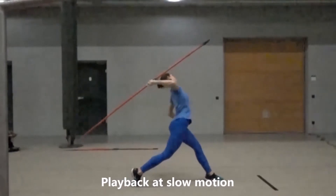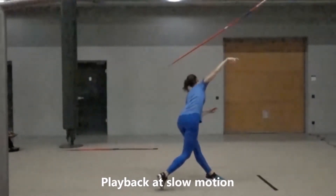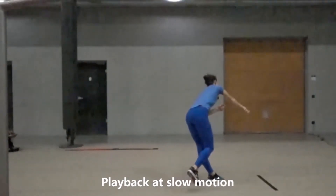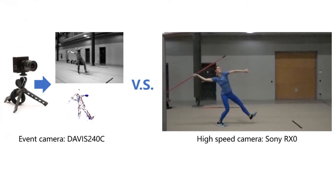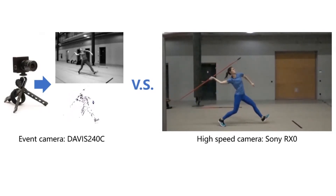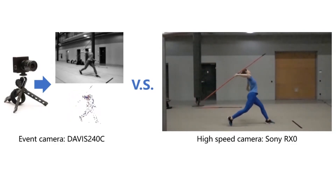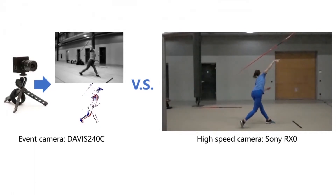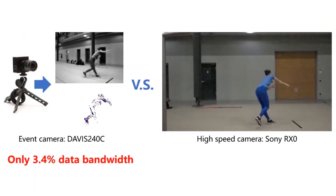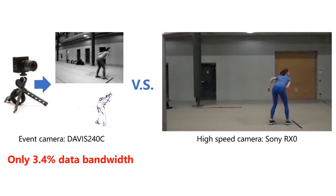Previously, this was only possible with high-speed cameras. In this paper, we leveraged the biology-inspired concept of an event camera that asynchronously measures the intensity changes at extremely high temporal resolution, resulting in a novel algorithm that is 30 times more data efficient than conventional methods.